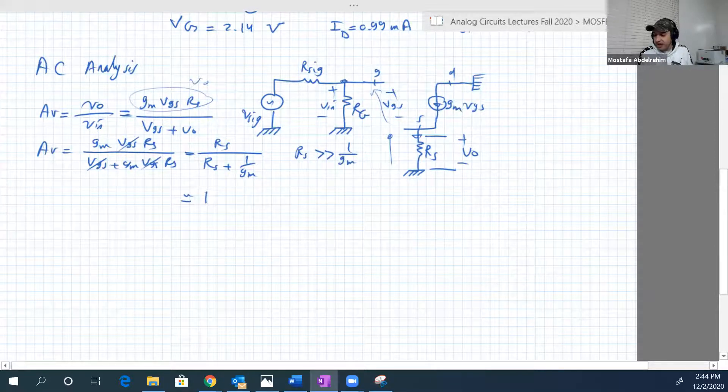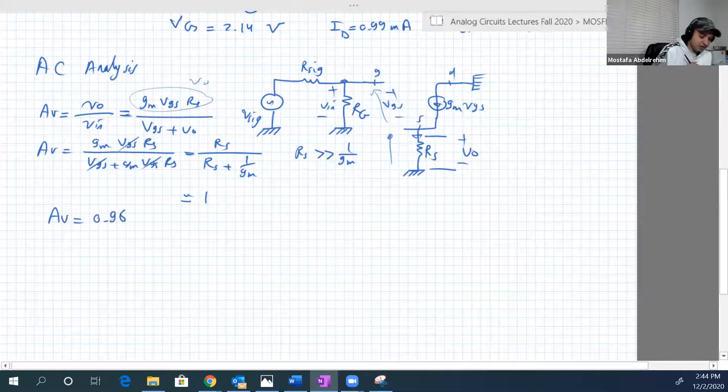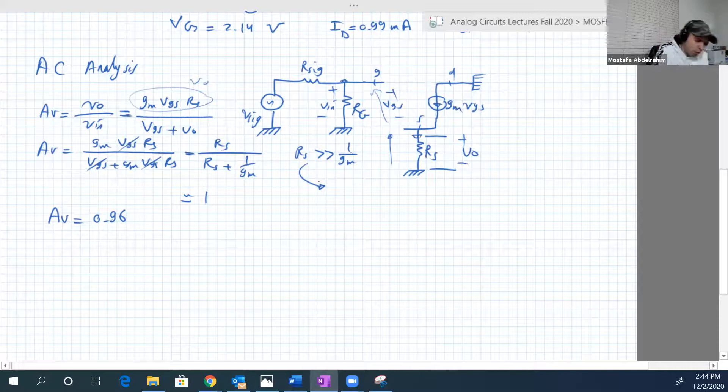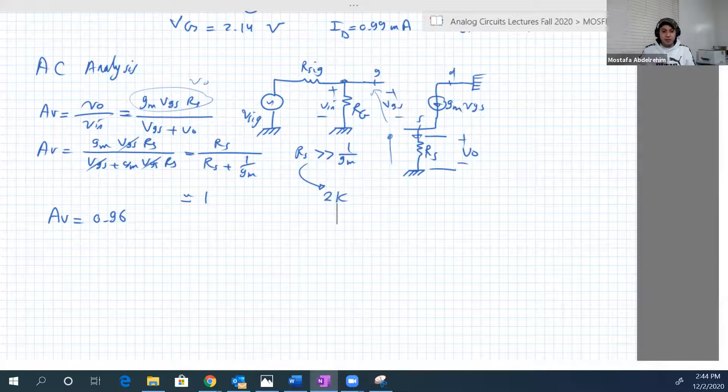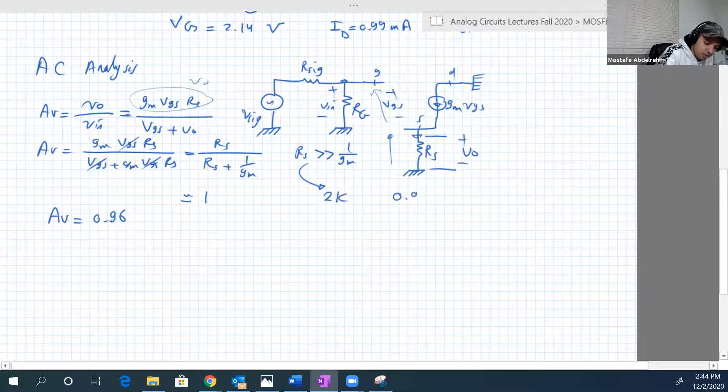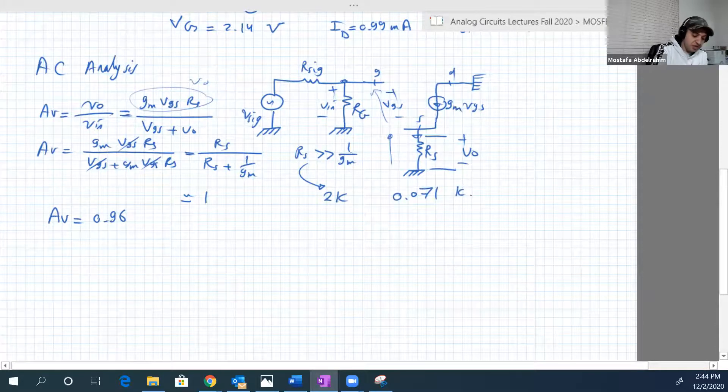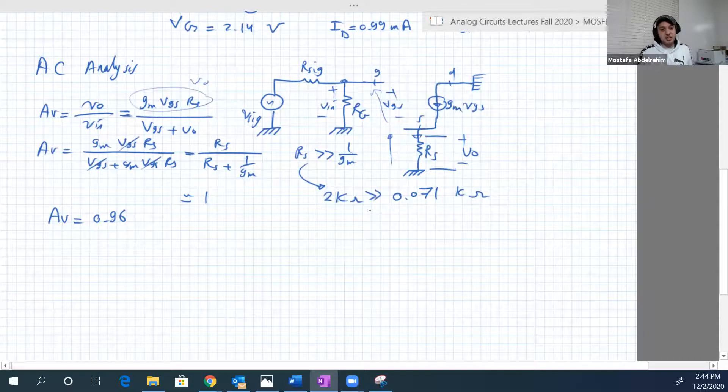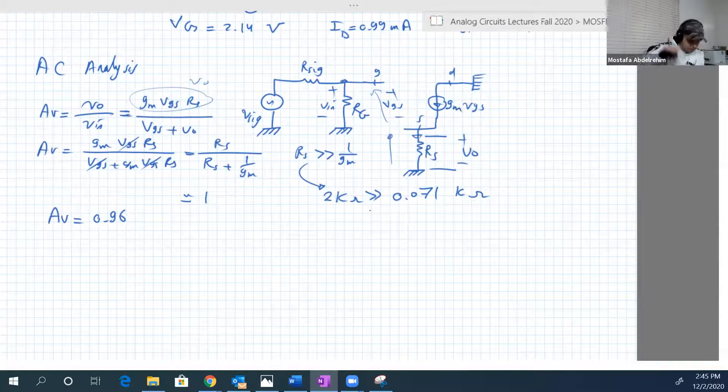In our case here, it will be approximately 0.96. So in our case, AV is equal to 0.96. And just let you check this inequality here, so RS is 2 kilo ohms, and one over GM, let's do it very quick, one over 14.1, it is 0.071 kilo. So basically, this is much larger than, or 2,000 much larger than 71.